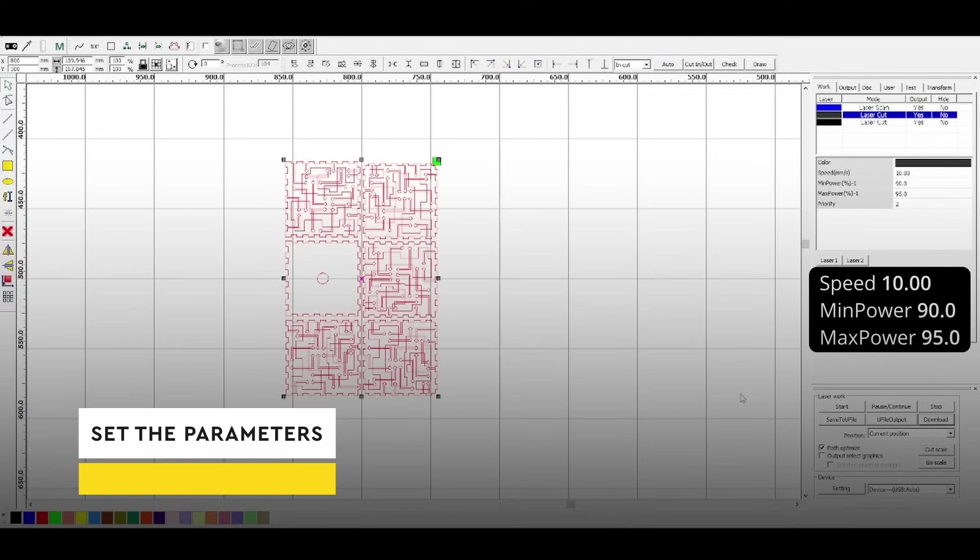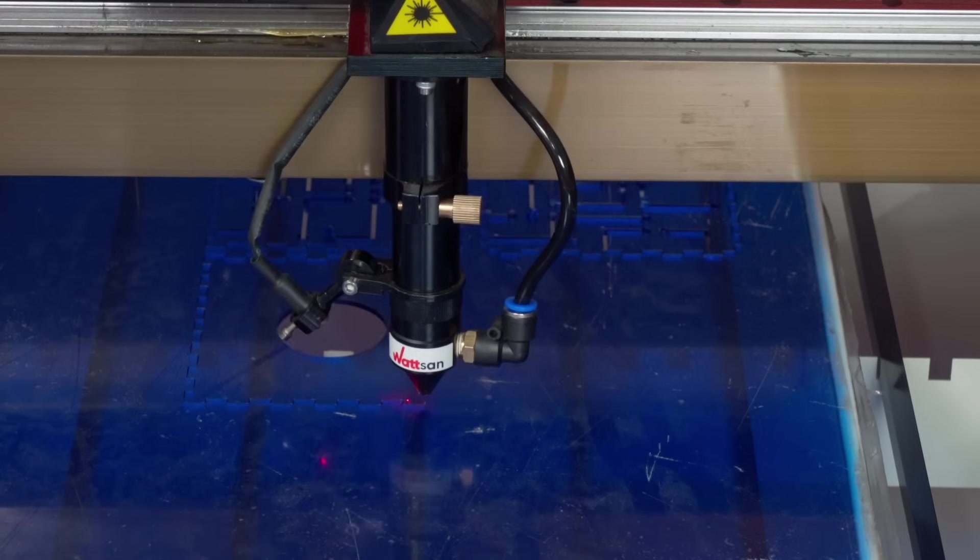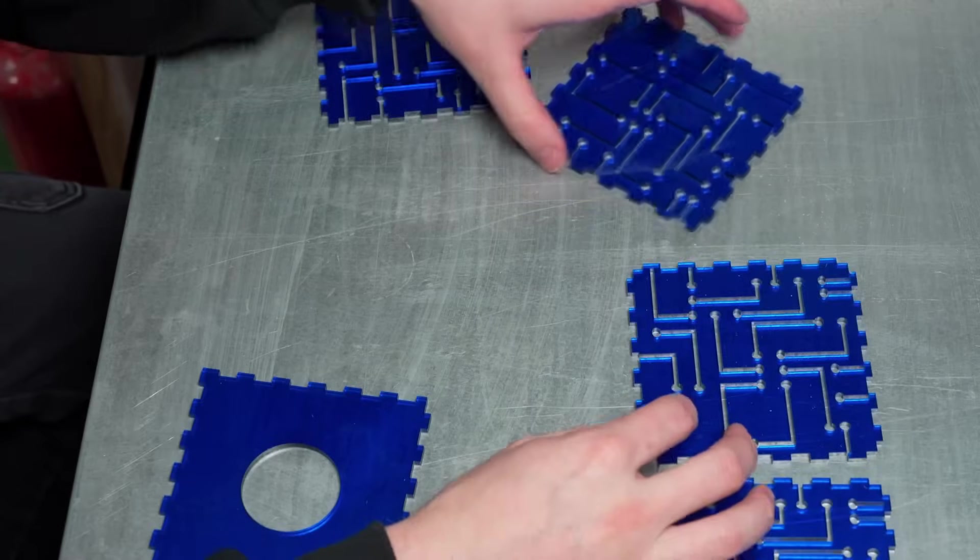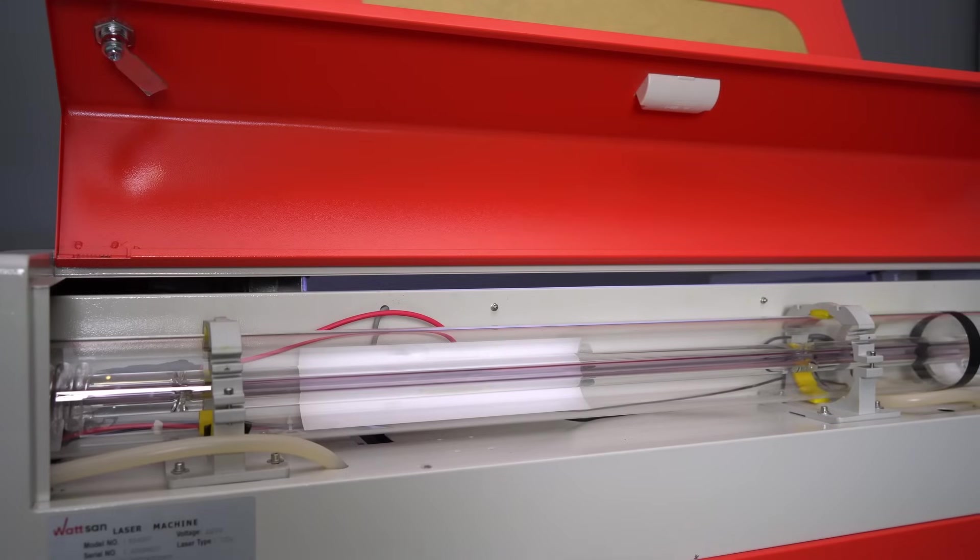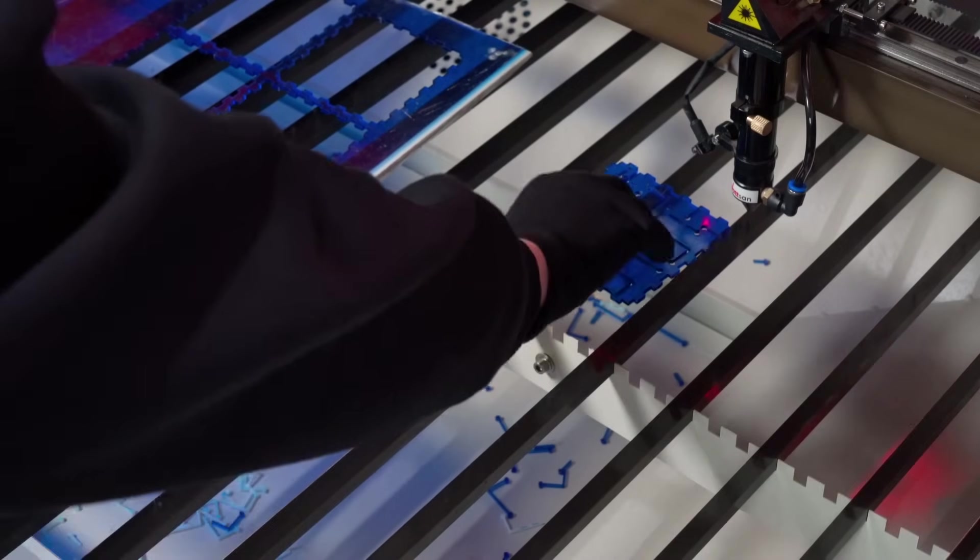At this point, we should tell you about the peculiarities of working with acrylic. Typically, 10 watts of power is used for every 1.5mm of acrylic. However, the power of the laser tube itself also affects the percentage we use. As you remember, we have 3mm of acrylic here.